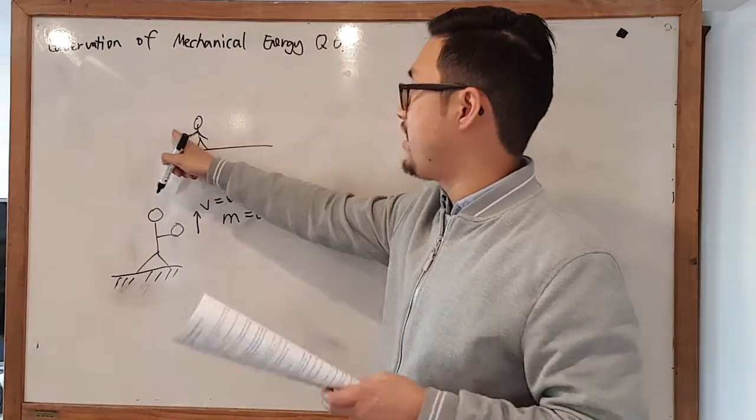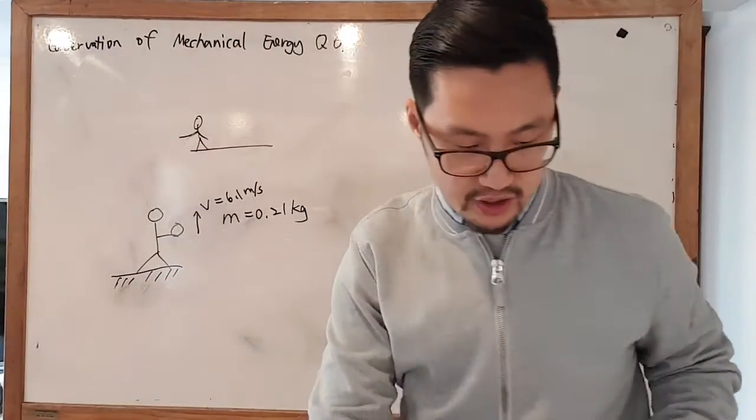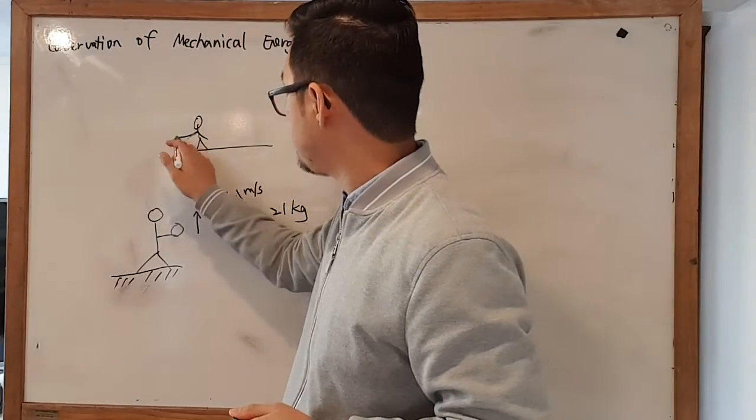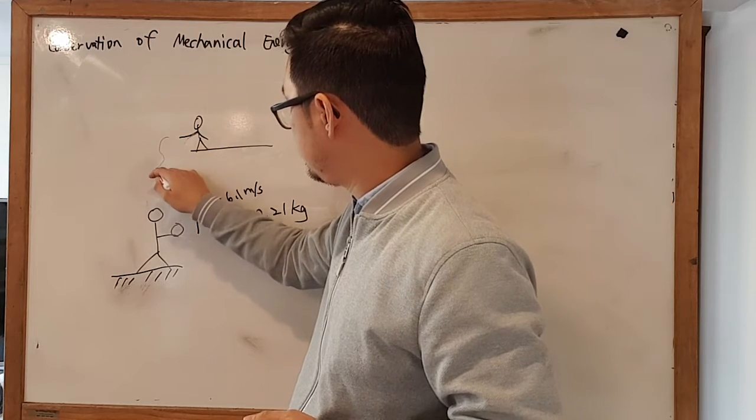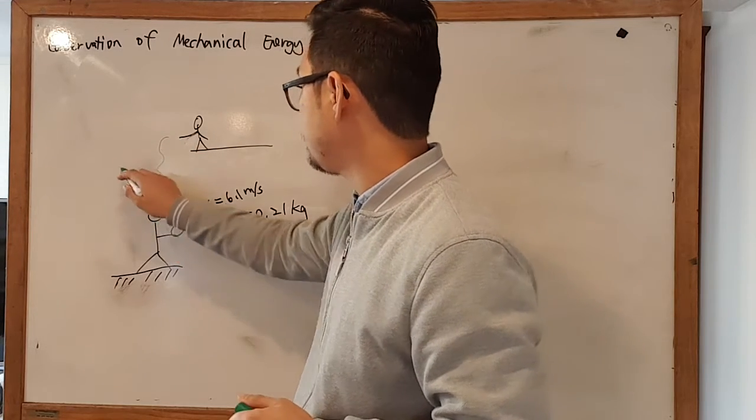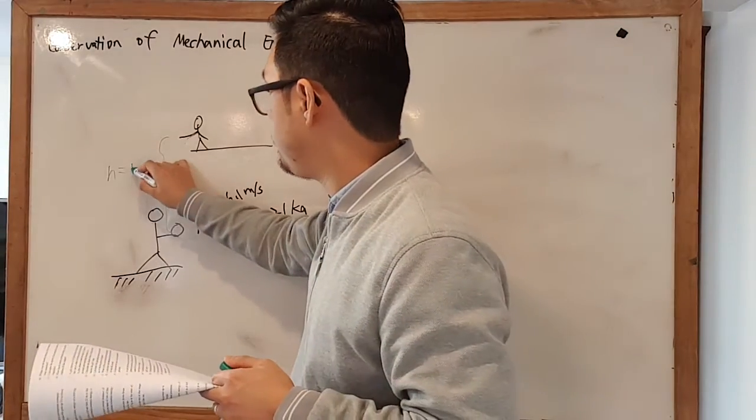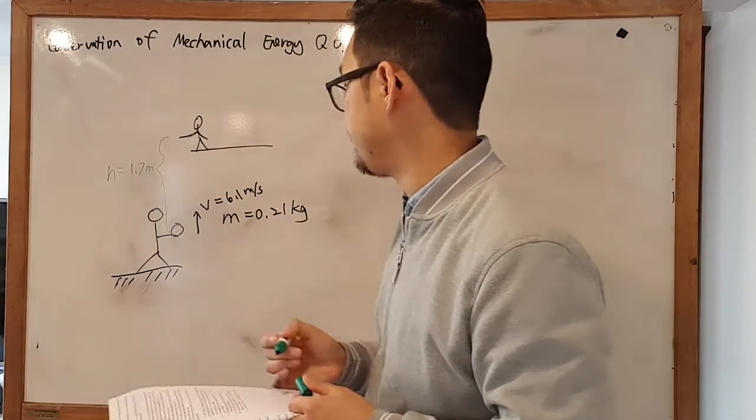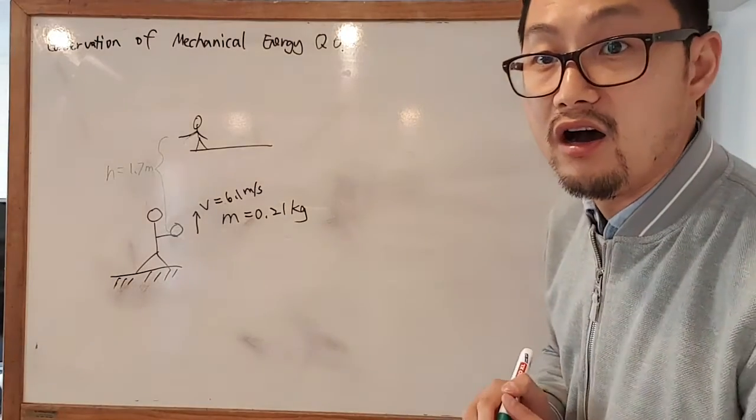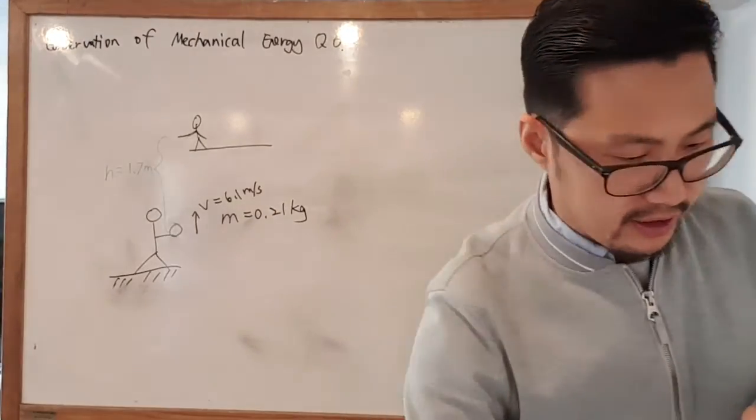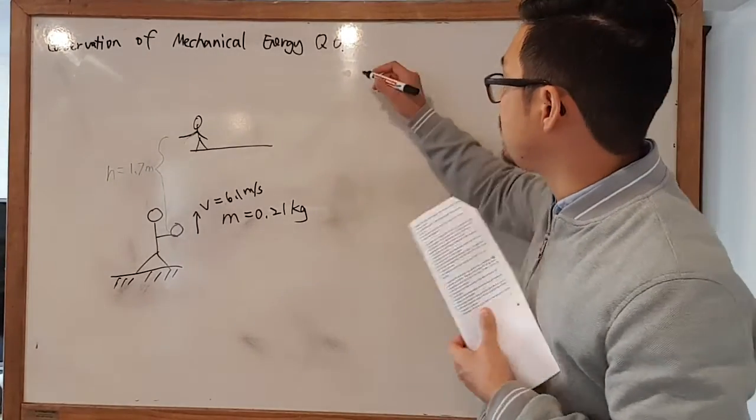Before it's caught, the height when it's caught is 1.7 meters high. So now we've got one, two, three—three pieces of information. Let's have a look at what the question is asking.